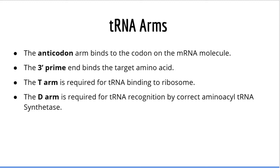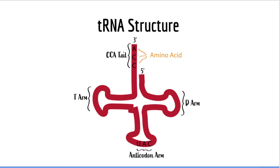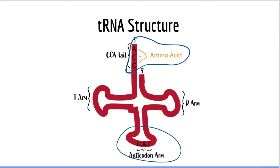Here we have a visual representation of a charged tRNA, which simply means a tRNA that has an amino acid attached to it. The amino acid binds to the CCA sequence on the 3' arm. Every tRNA molecule, regardless of type, binds its amino acid via a CCA sequence. Opposite to the 3' arm is the anticodon arm, which contains a 3-nucleotide sequence that binds to another 3-nucleotide sequence on mRNA called a codon. We can also see the T arm, important for tRNA binding to ribosomes, and the D arm, important for connecting the correct amino acids to the appropriate tRNA.